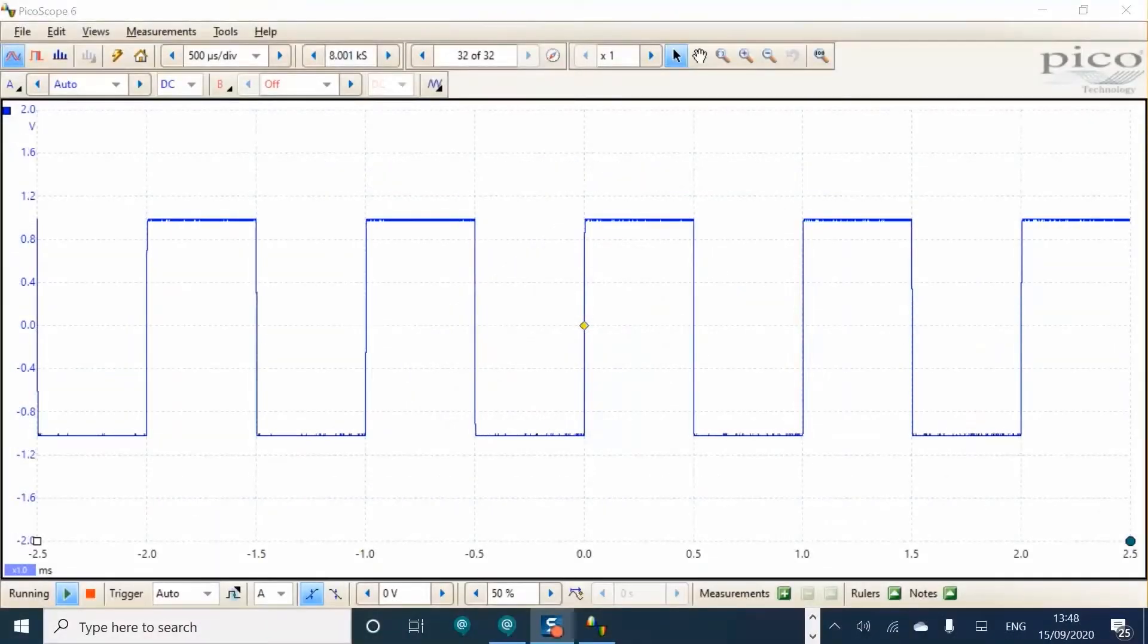The setup begins where part 1 ended, with a 1 kHz square wave displayed on channel A and the x10 probe connected to the AWG using a BNC to crop clip cable.